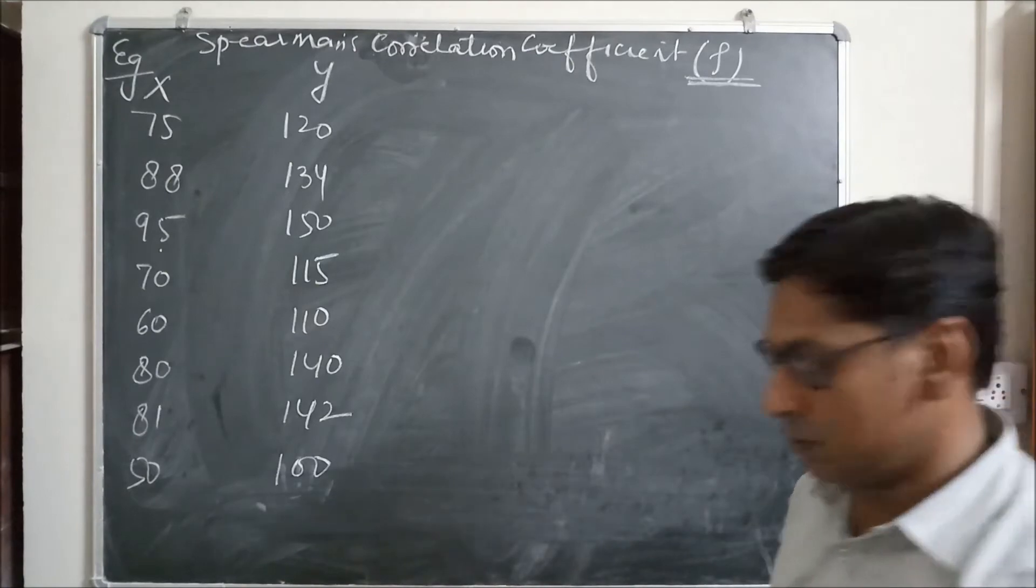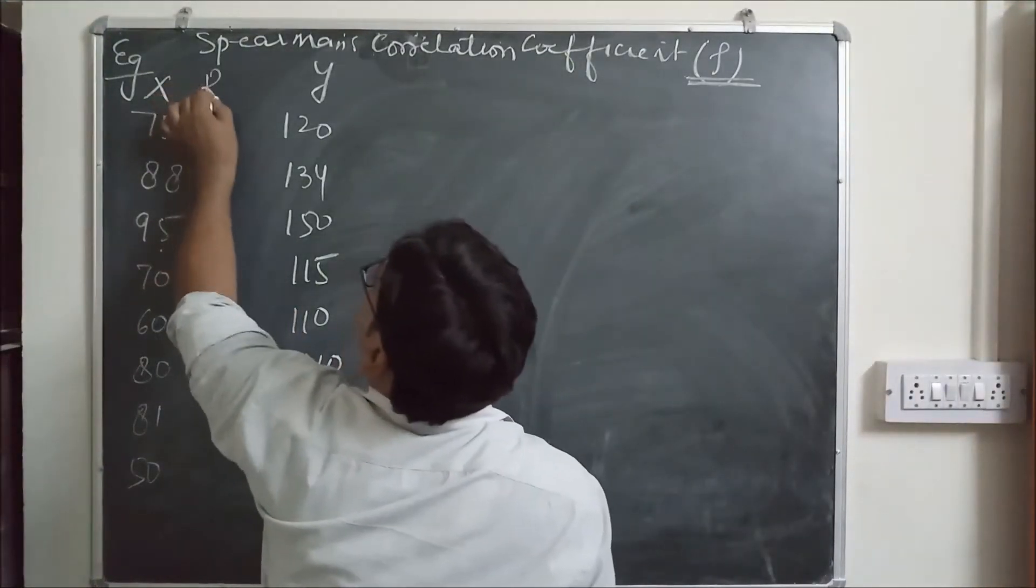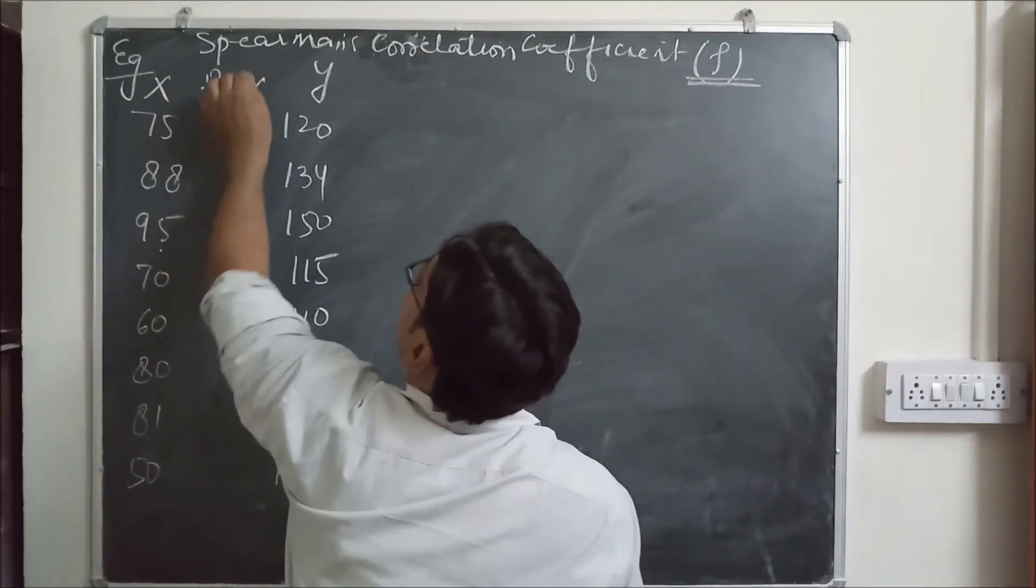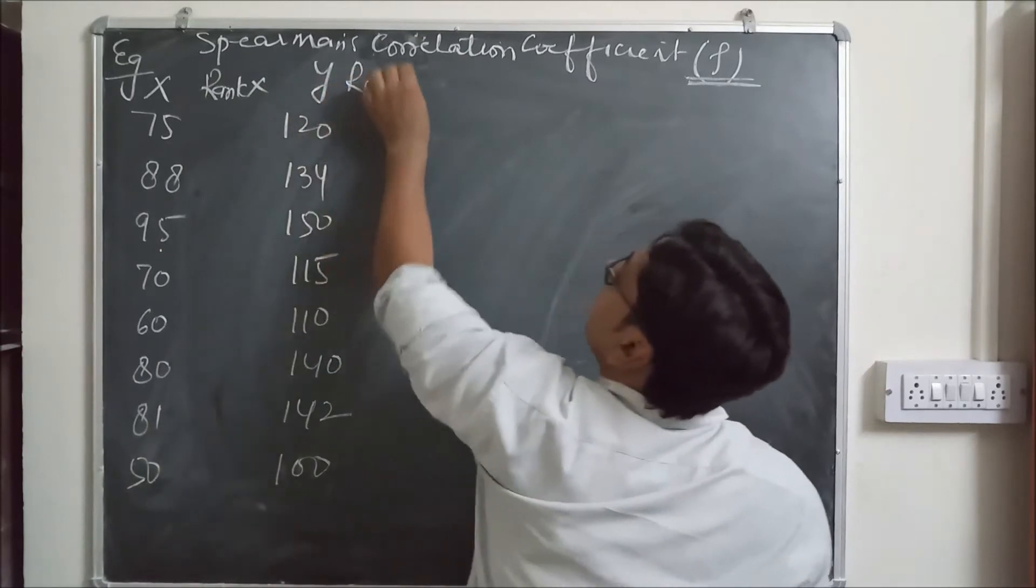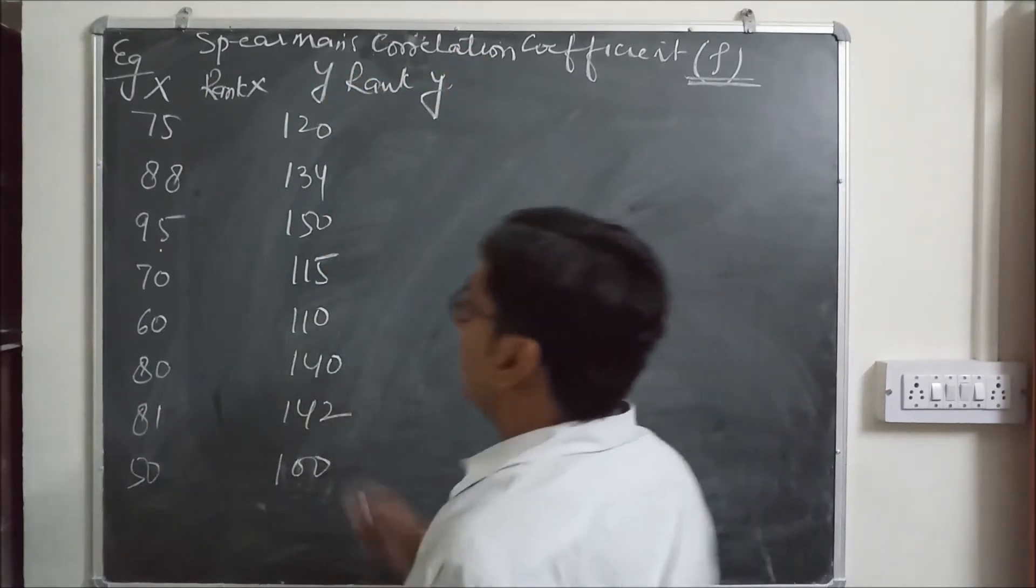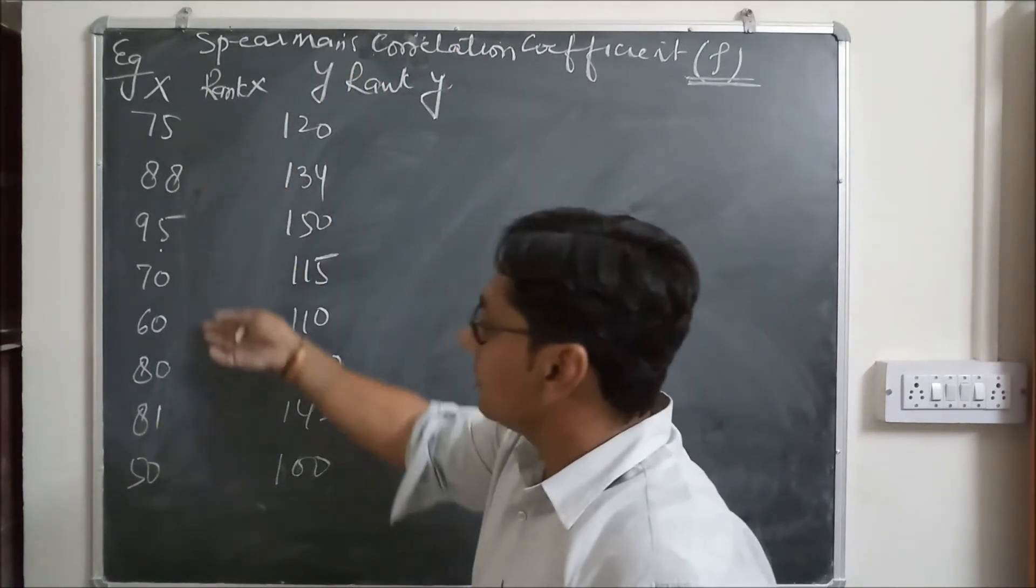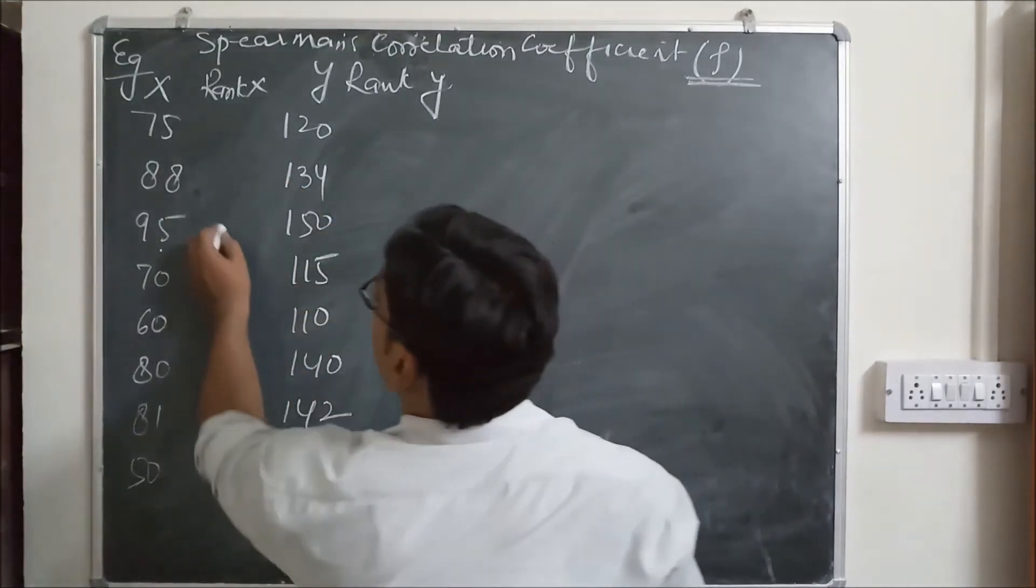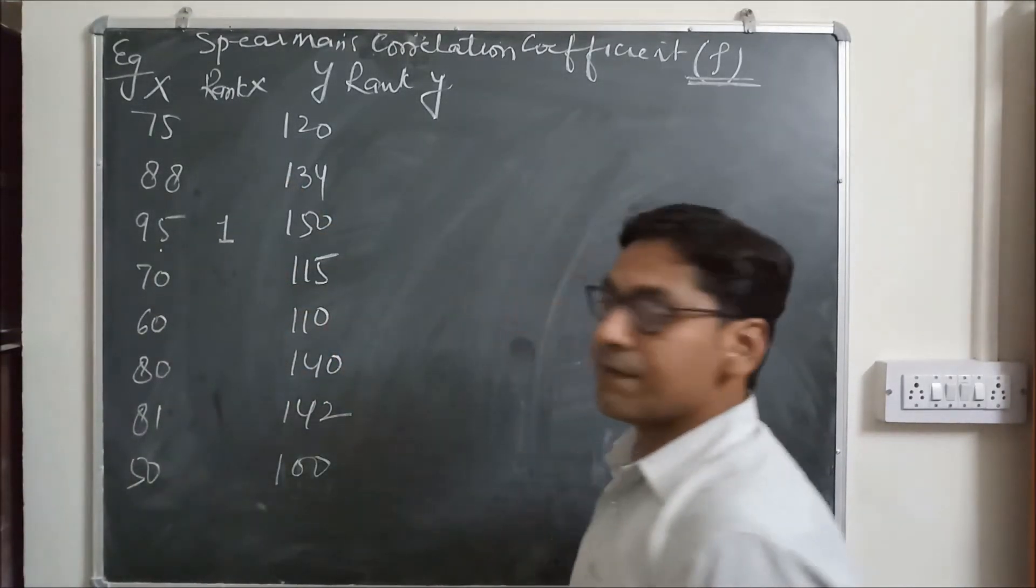First of all, we give rank to these values. That is rank X and here we give rank Y. Now we select the highest value from this, that is 95, so we give first rank to 95.